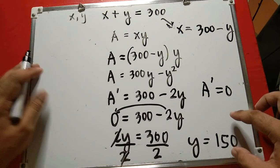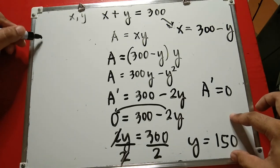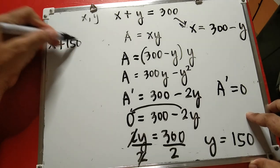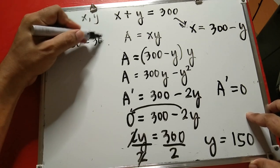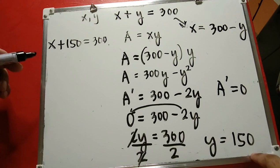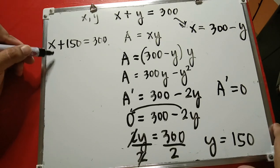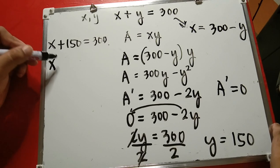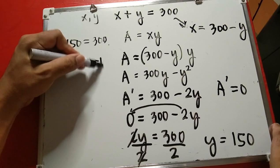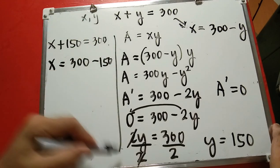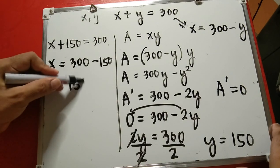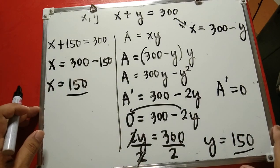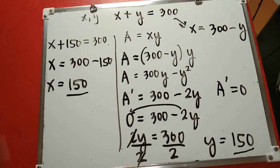Next, plug y equals 150 back into the first equation: x plus 150 equals 300. Solving for x by subtracting 150 from both sides gives x equals 150. So both positive numbers are 150 and 150.